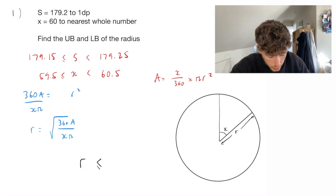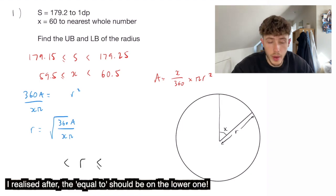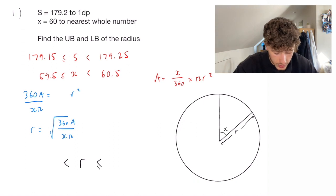Now r is going to have an upper bound and a lower bound, which is ultimately what we want to find. To get the upper bound of r, we need the upper bound of a and the lower bound of the x.